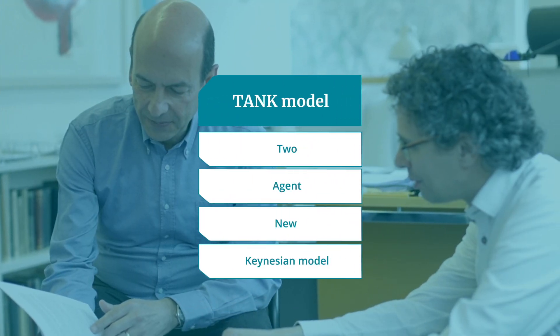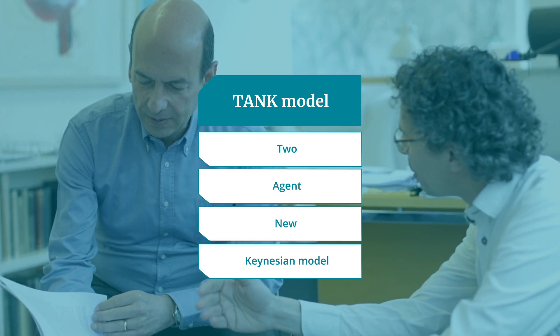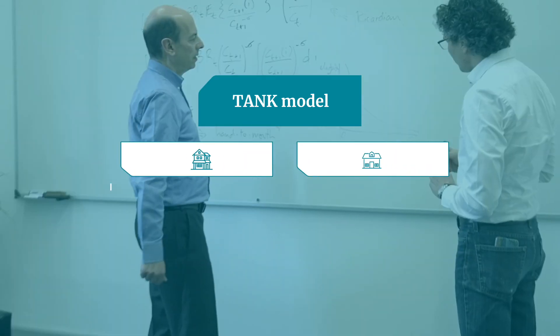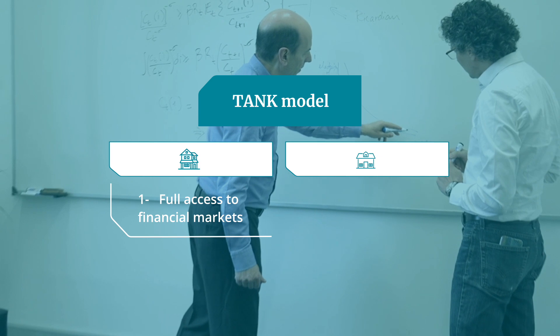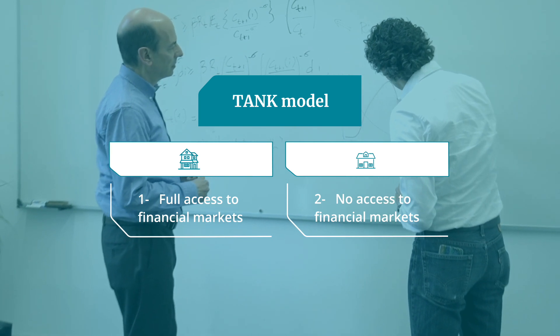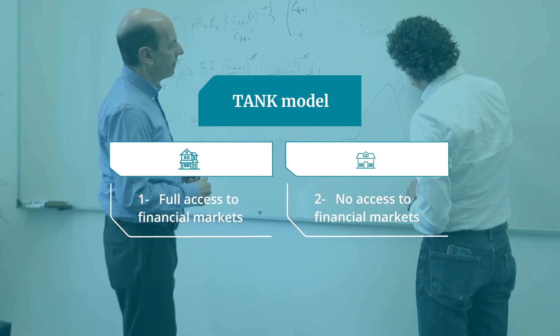In current work, we are trying to understand whether a simple model that we call TANK — which stands for Two-Agent New Keynesian model — may be a good approximation of the properties of these richer HANK models. In a TANK model, there are two types of agents: one type has full access to financial markets, and the second type has no access to financial markets whatsoever, so they cannot smooth consumption by borrowing and lending. This is very much a work in progress and we look forward to reporting some exciting findings using this framework.